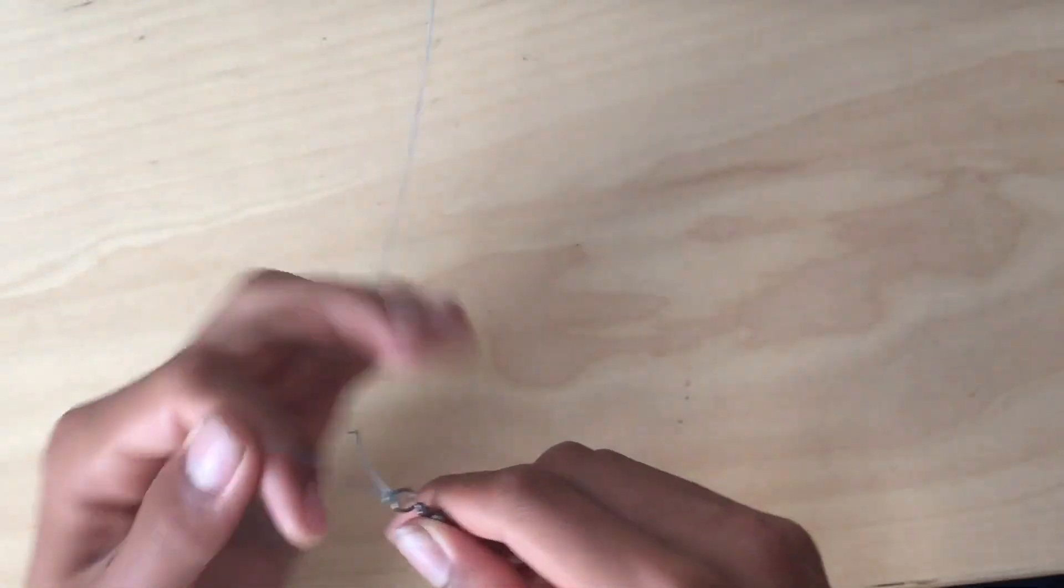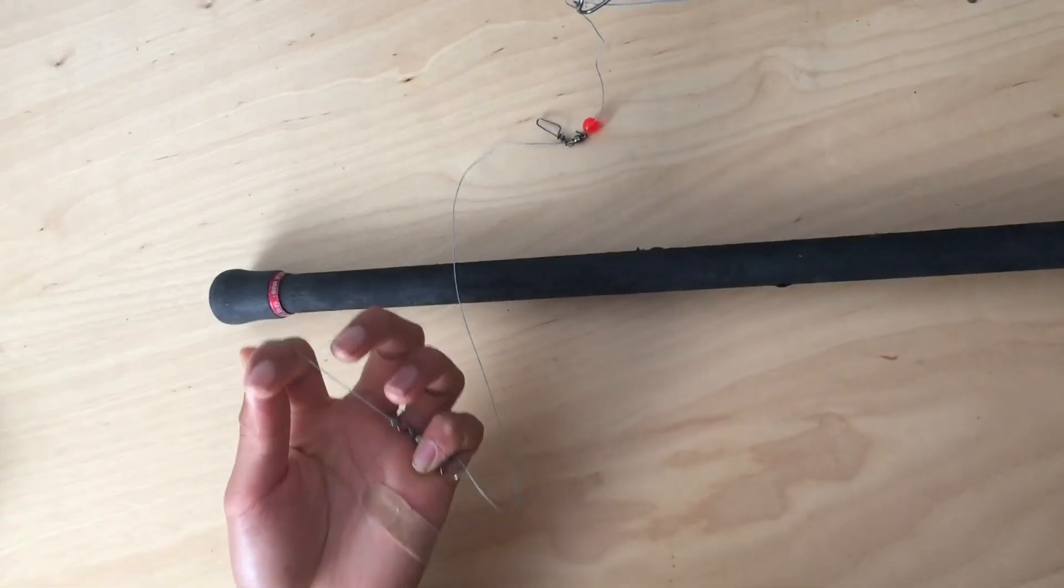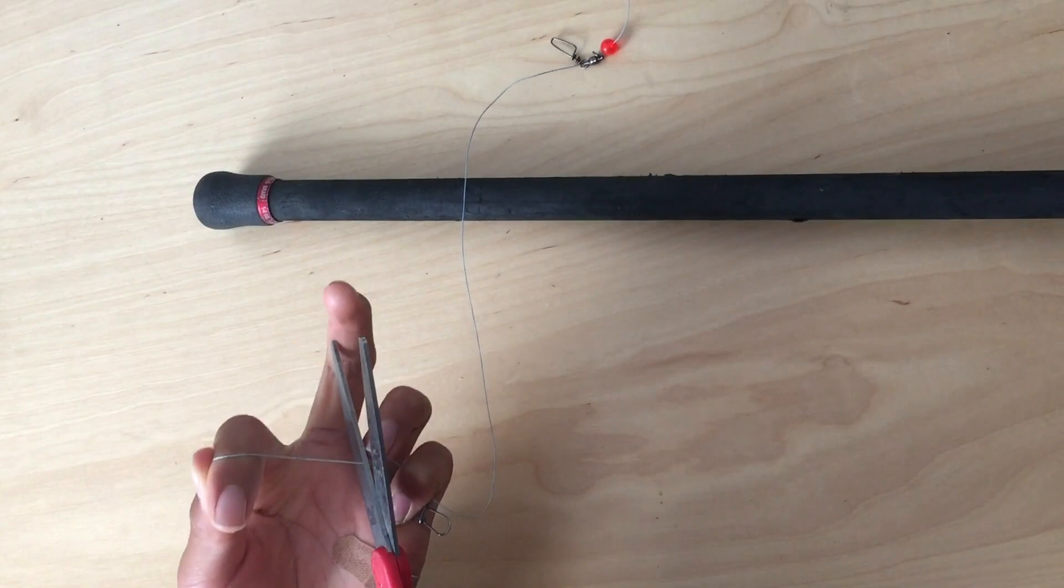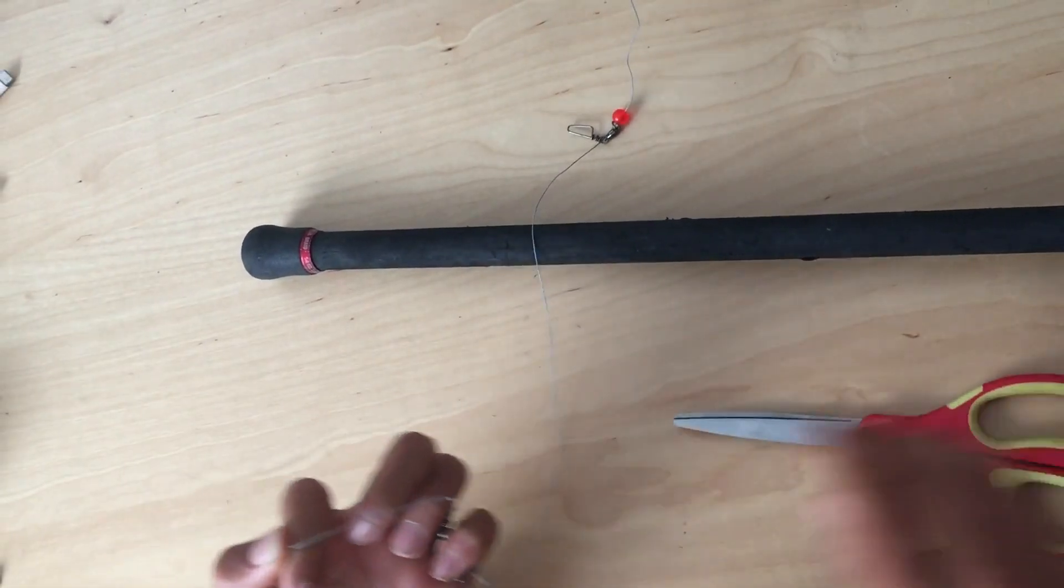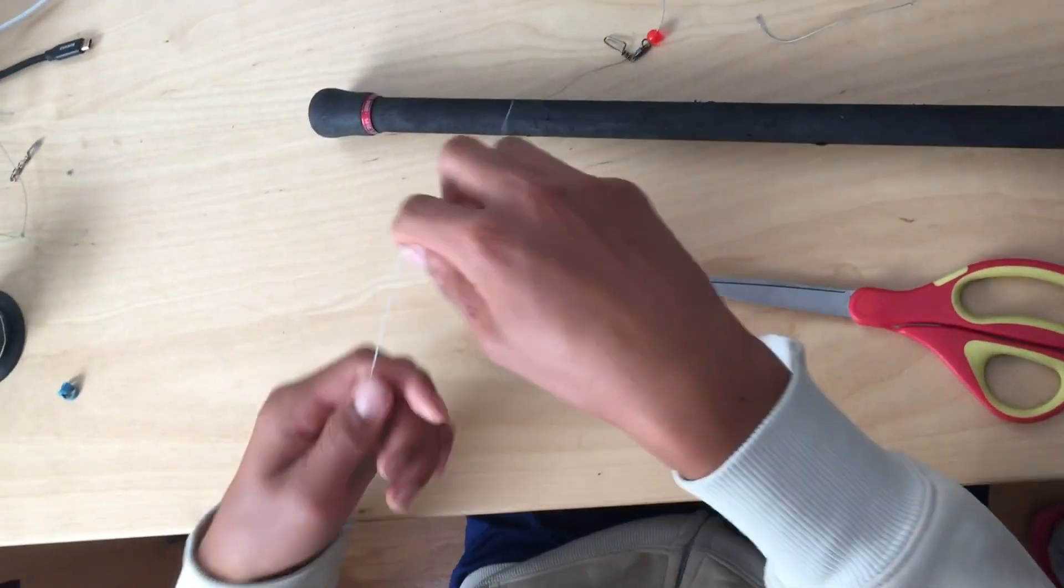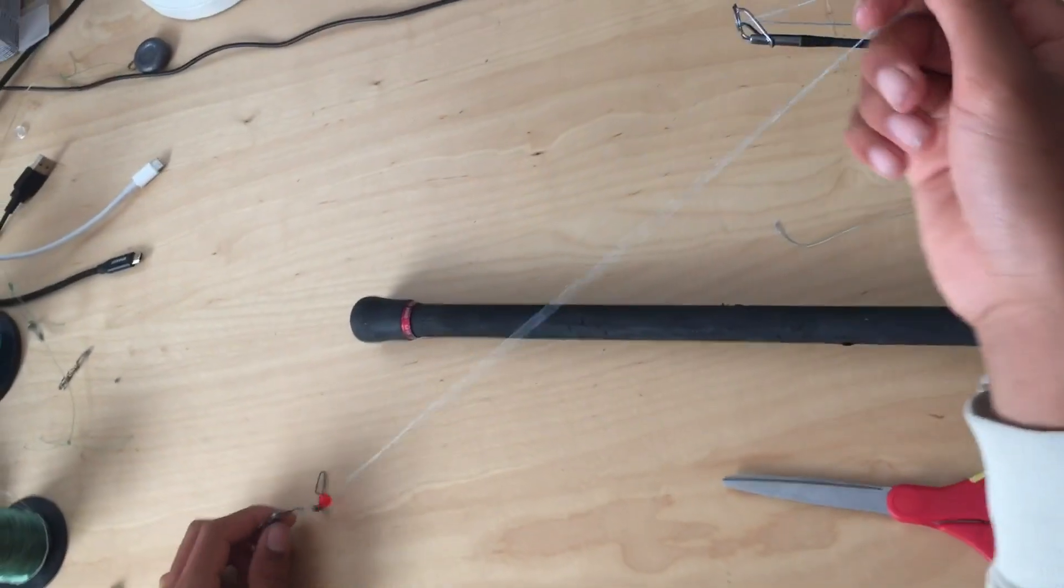And then trim off the tag end. And that's it. That's how to tie a swivel to the main line.